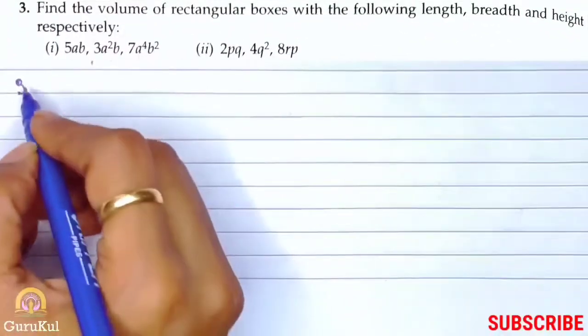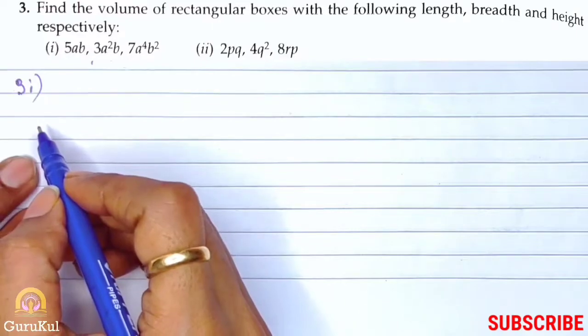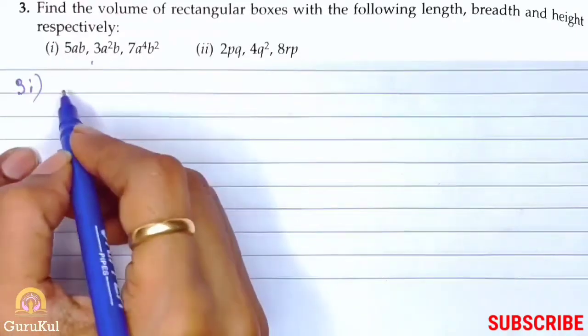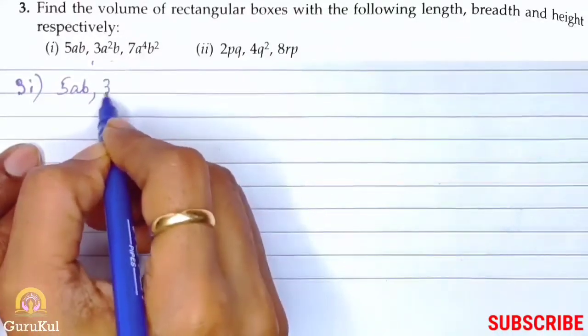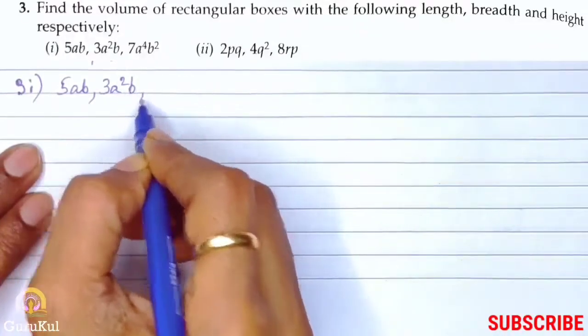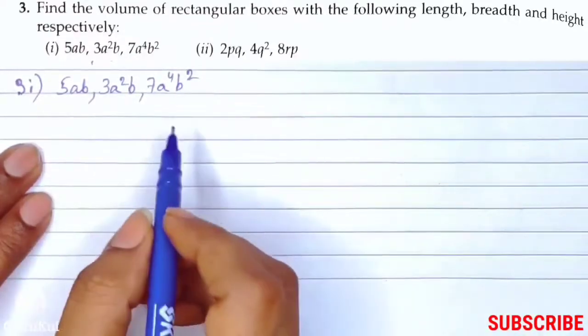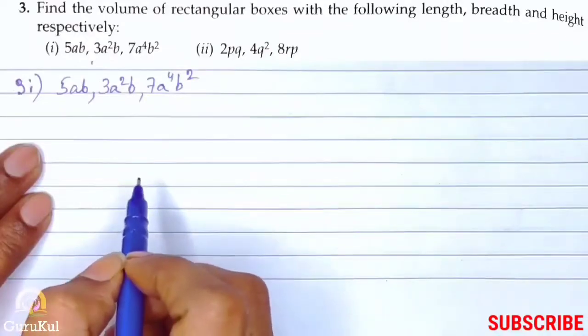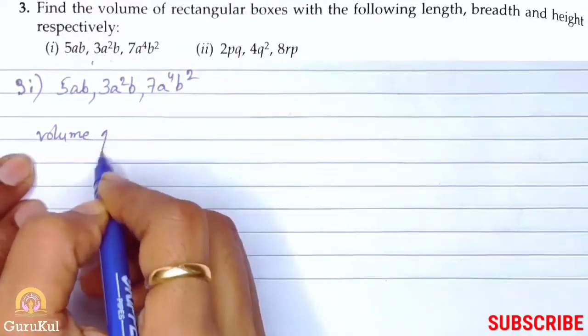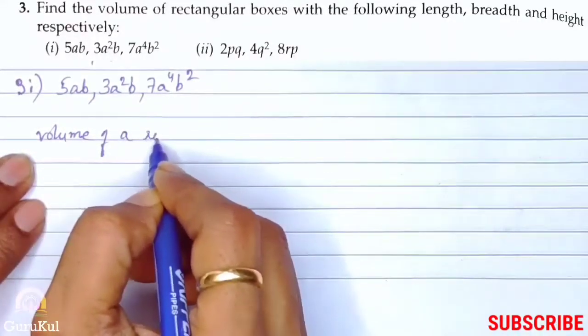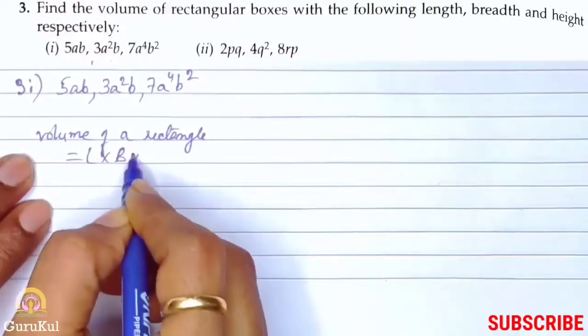Question number 3, first part. We need to find the volume of rectangular boxes with the following length, breadth, and height respectively. So the measurements are 5ab, 3a square b, 7a to the power 4 b to the power 2. So these are all the measurements.